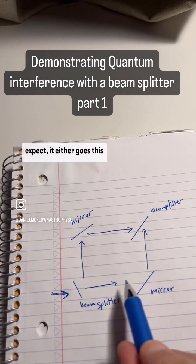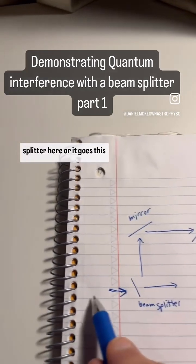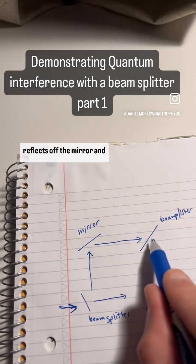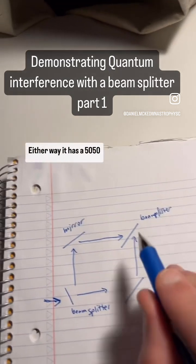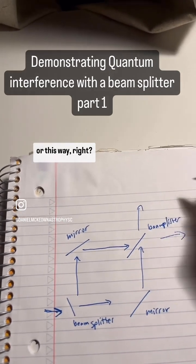it either goes this way, reflects off the mirror, and then comes into the beam splitter here, or it goes this way, reflects off the mirror, and goes through the beam splitter here. Either way, it has a 50-50 probability of going this way or this way, right?